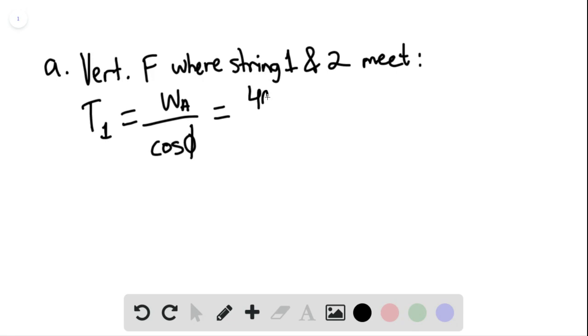This is equaling 40 newtons divided by cosine of 35 degrees. This is equaling 49 newtons.